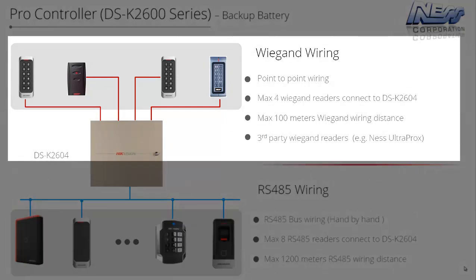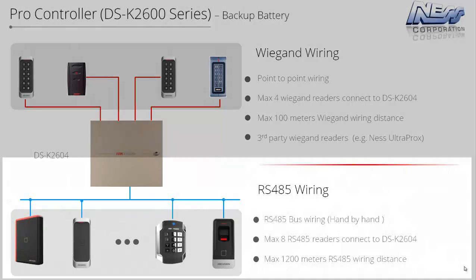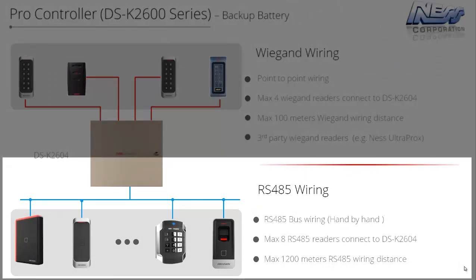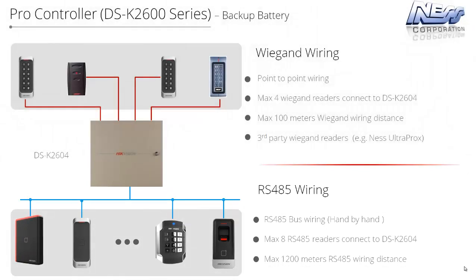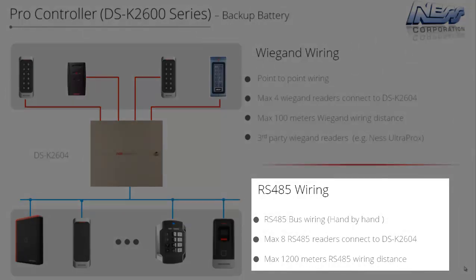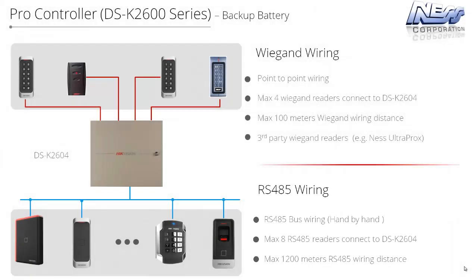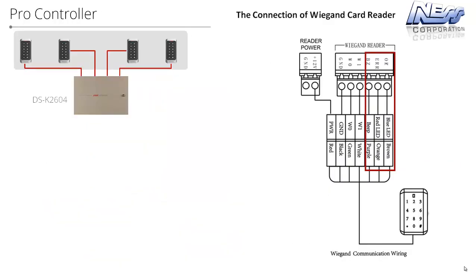The controller supports up to 4 Wiegand card readers in addition to 8 RS-485 readers. So on a four-door controller with a card reader in and out on a particular door, you would wire it as RS-485. There are many other advantages of using RS-485 — cable length, and you don't have to use twisted shielded cable as required by Wiegand. RS-485 is also fully supervised so the controller knows if a reader is present or tampered, and has full control over the LED and buzzer.